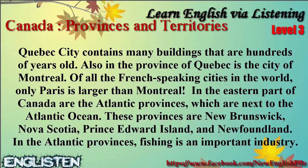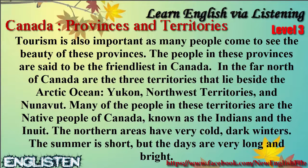In the eastern part of Canada are the Atlantic provinces, which are next to the Atlantic Ocean. These provinces are New Brunswick, Nova Scotia, Prince Edward Island, and Newfoundland. In the Atlantic provinces, fishing is an important industry. Tourism is also important, as many people come to see the beauty of these provinces. The people in these provinces are said to be the friendliest in Canada.